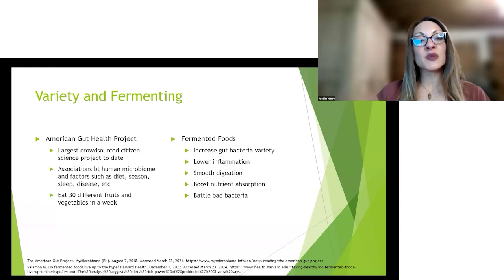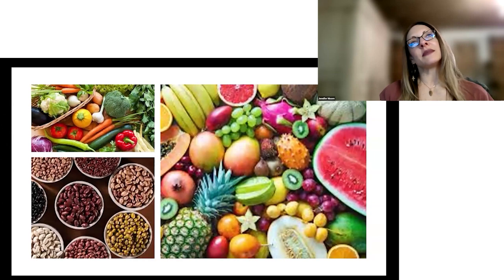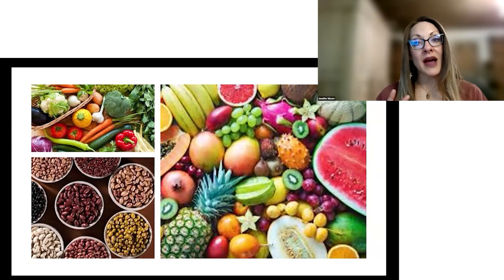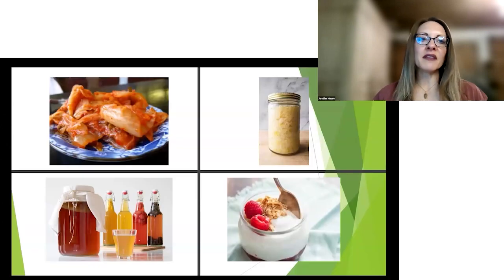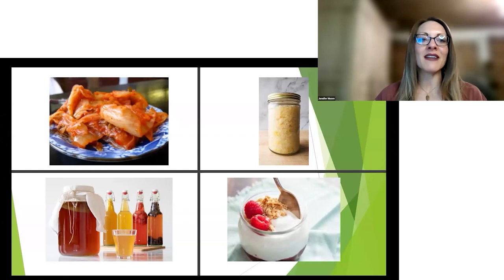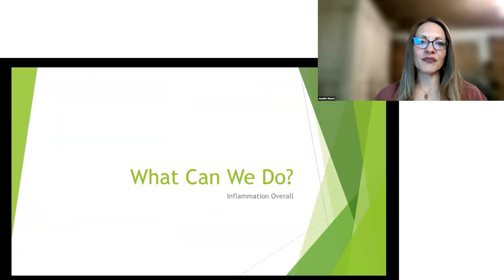Fermented foods also increase gut variety - from a different study - and they lower inflammation, soothe digestion, boost nutrient absorption, and battle bad bacteria. People sometimes say they don't know what they'd eat on a plant-based diet, but look at the variety available. For fermented foods, some examples include sauerkraut, kimchi, kombucha tea, and plant-based yogurts. Adding frozen berries to that yogurt is delicious, and berries are super good for reducing inflammation.